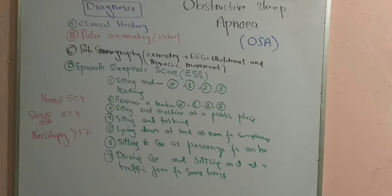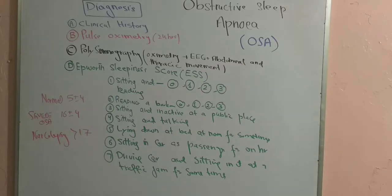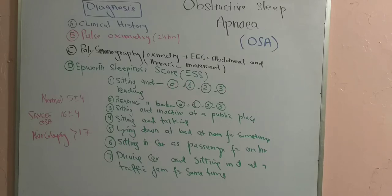Polysomnography is conducted in dedicated rooms where the patient sleeps under full monitoring. There is also an important scoring system called the Epworth Sleepiness Score. You ask the patient how likely they are to doze in certain situations: zero means never, one means a slight chance, two means moderate chance, and three means the highest chance of dozing.